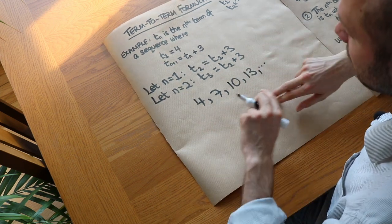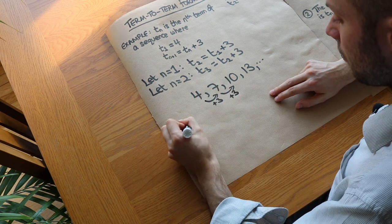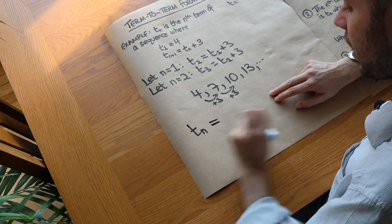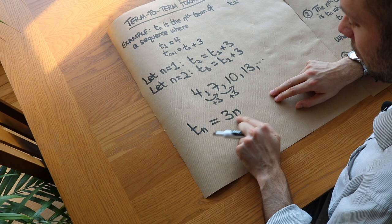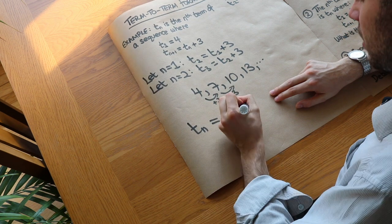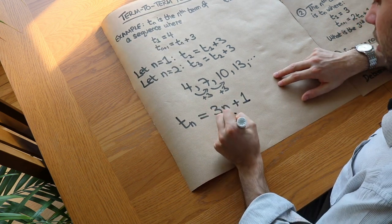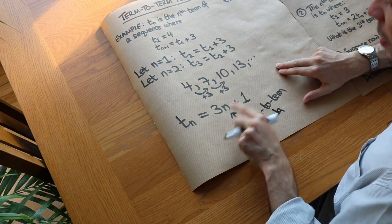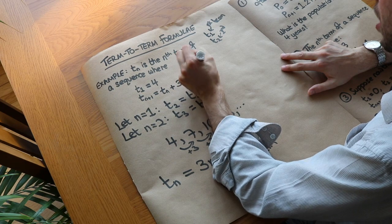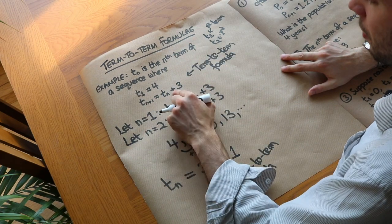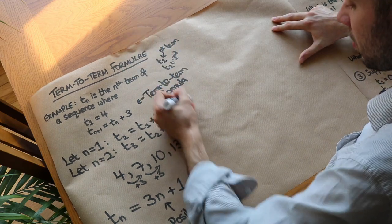We know how to find an nth term formula. If we're adding 3 each time, the nth term Tn equals 3n plus 1. This expression is known as a position-to-term formula, because we're using the position n in the sequence to work out the term. Whereas Tn+1 = Tn + 3 is known as a term-to-term formula, because each term is defined in terms of the previous term in the sequence.